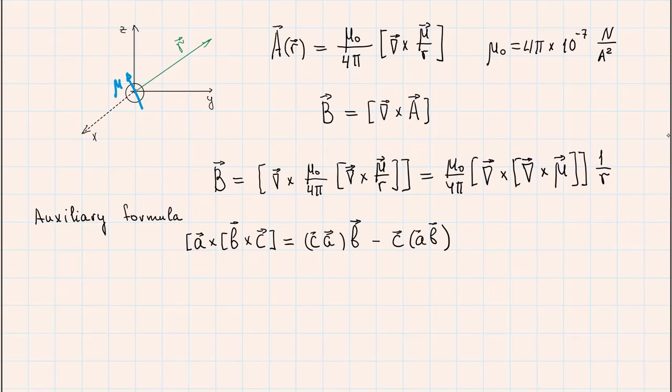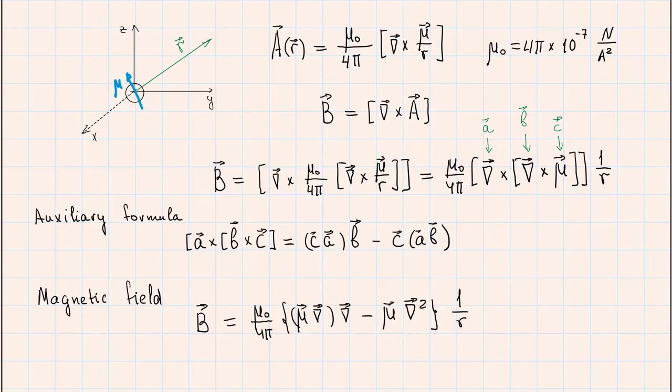Let us associate this operator nabla with vector A, this operator nabla with vector B and this magnetic moment with vector C. Then we can directly apply our auxiliary formula. It gives us an expression for the magnetic field B made by the magnetic moment mu. Here we obtain the magnetic field which is basically an action of a vector differential operator which is in the brackets on the inverse distance.